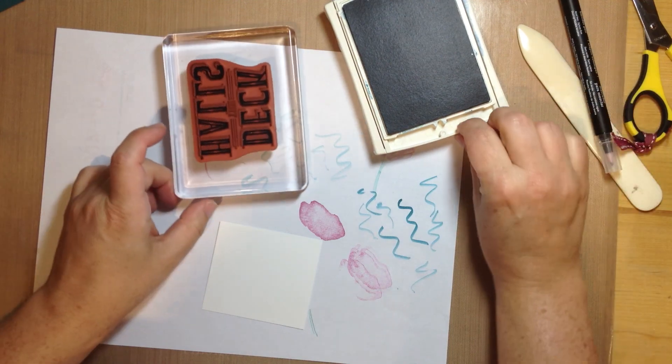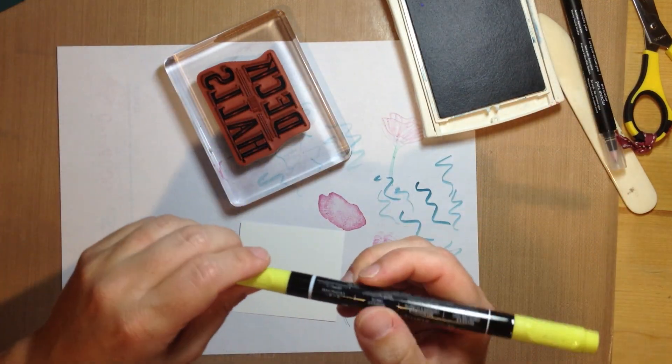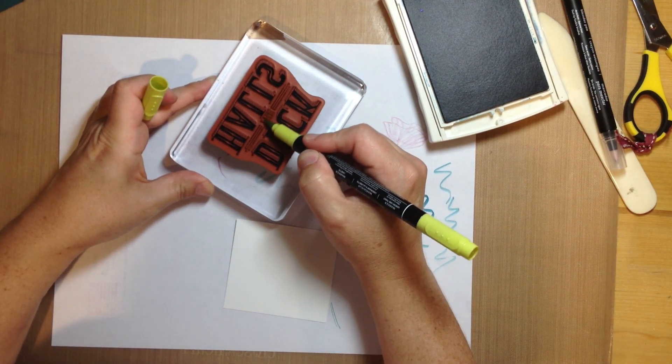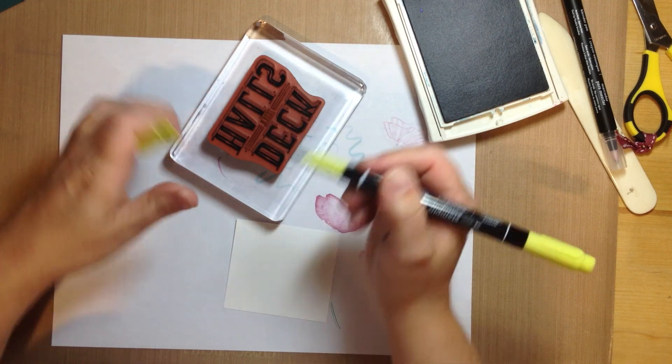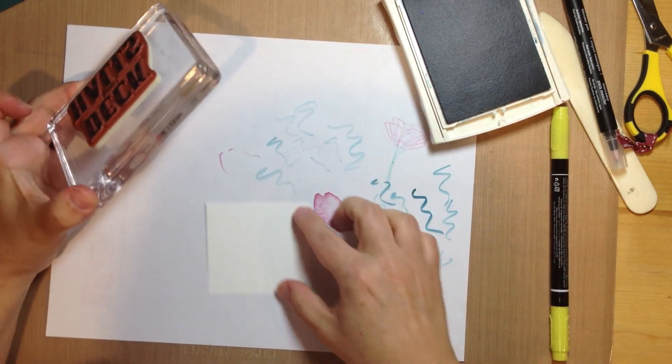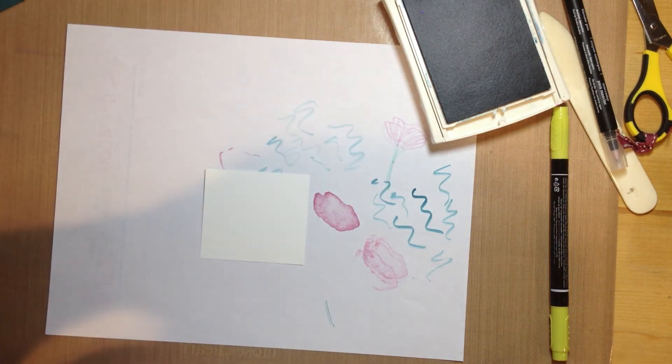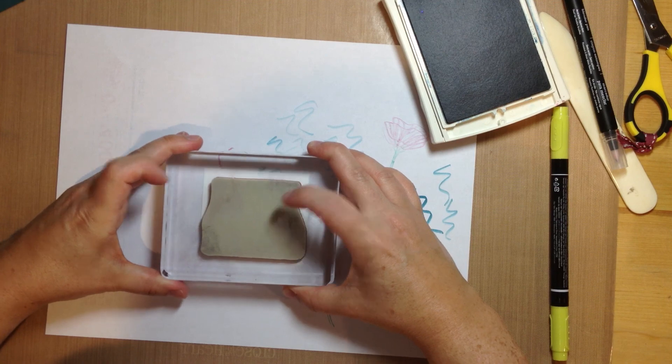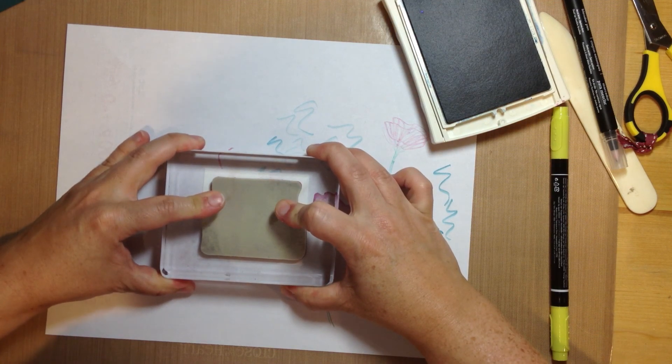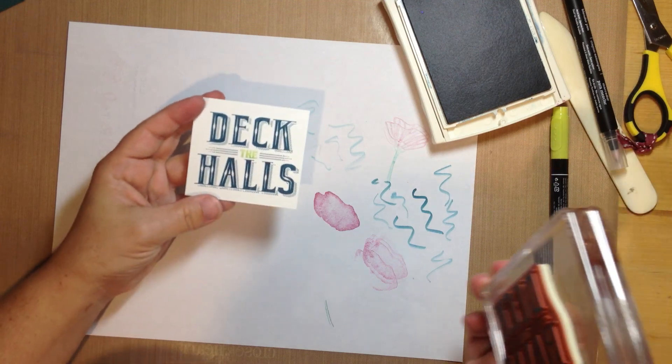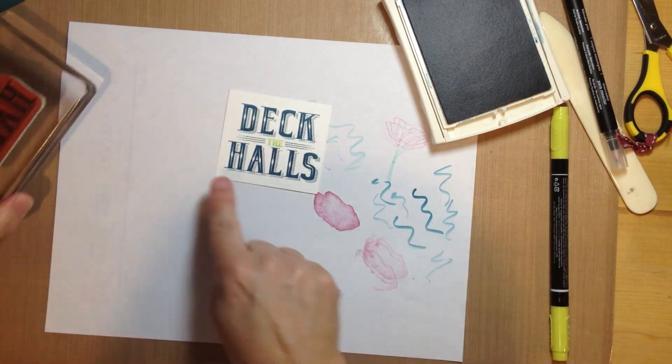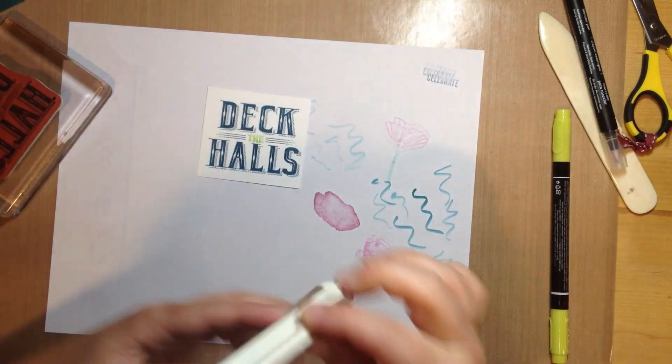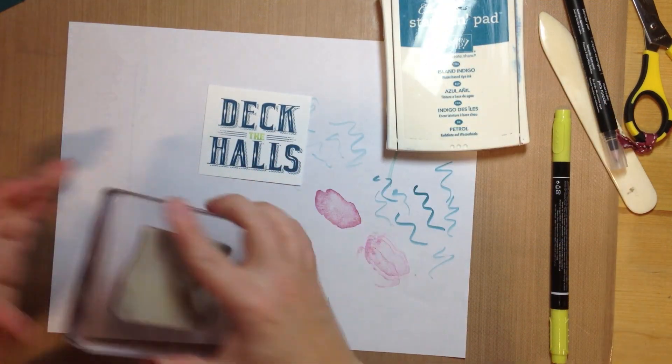And then I'm going to come in with my Lemon Lime Twist marker and just color the word the. And then I'll stamp it down. And there we go. So it still allows the Deck the Halls to be a nice crisp image. And then you still get the two-toned look.